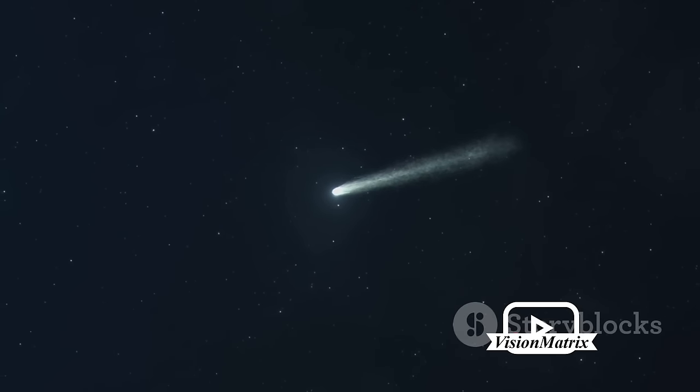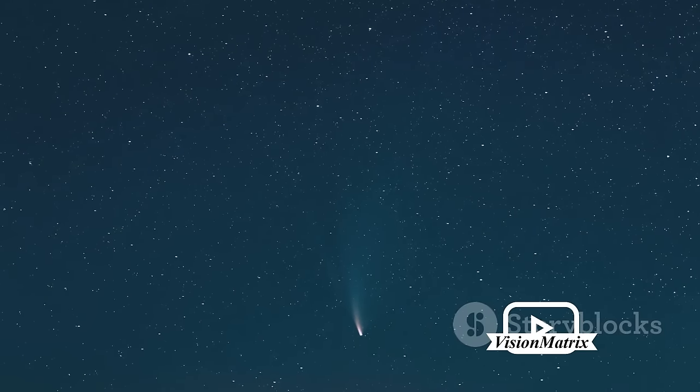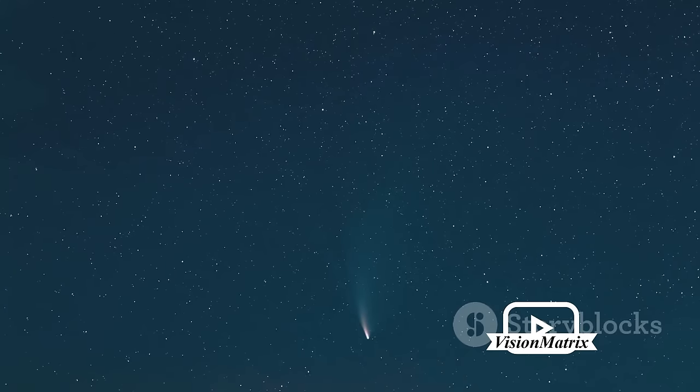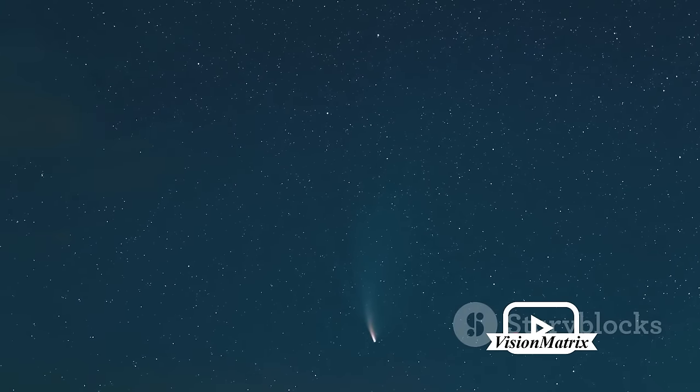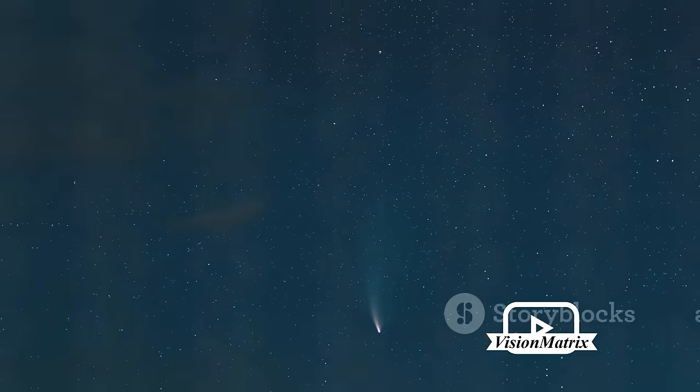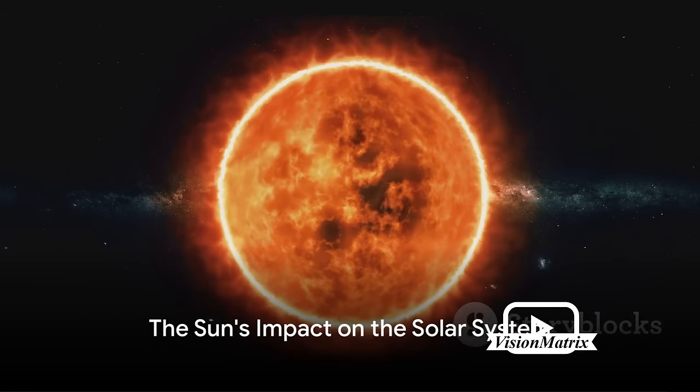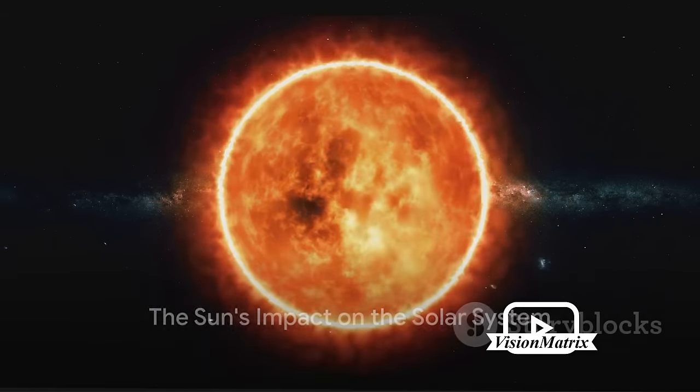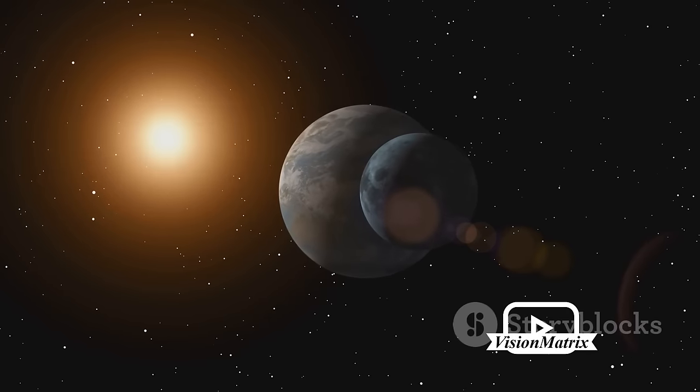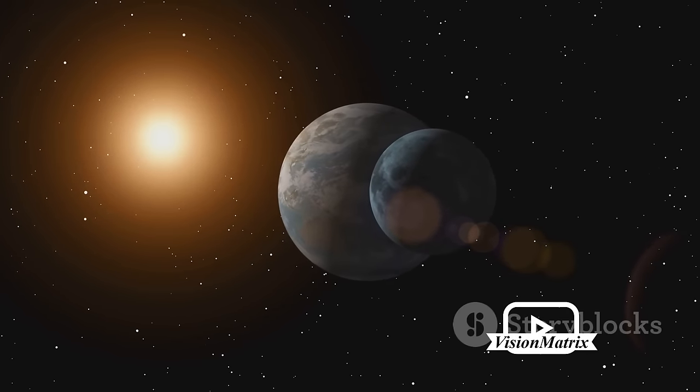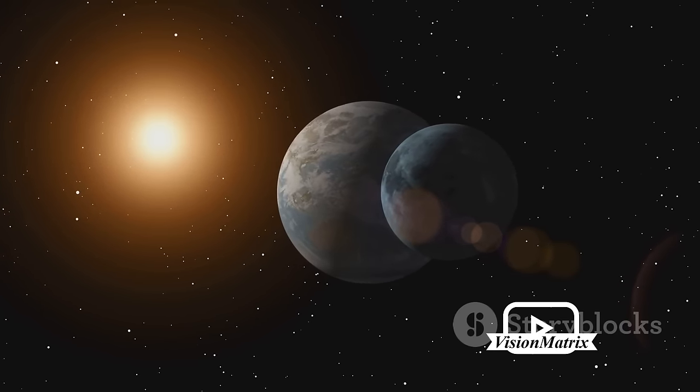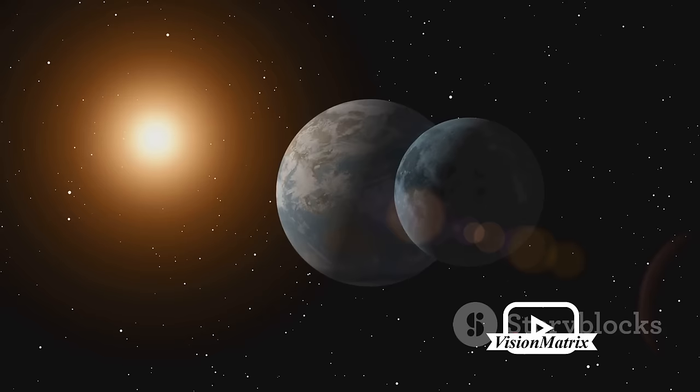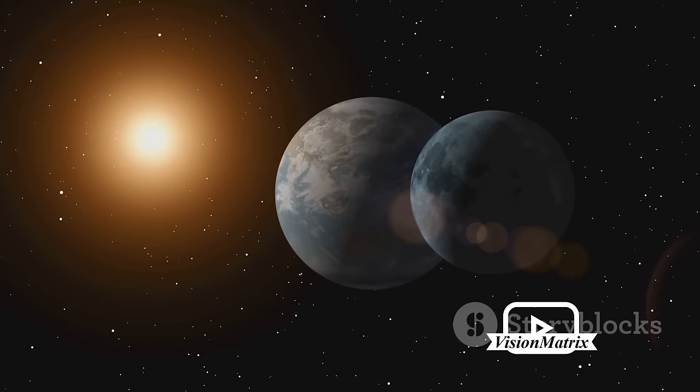Comets, the icy travelers of our solar system, originate from its farthest reaches, sprouting spectacular tails as they approach the Sun. Not merely celestial showpieces, these bodies have had profound impacts on Earth, from causing mass extinctions to possibly seeding life-sustaining water. These celestial wanderers have played a crucial role in shaping our planet and possibly life itself. The Sun, our very own star, has a profound impact on our solar system.